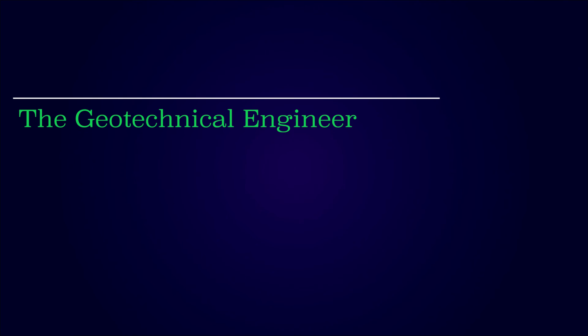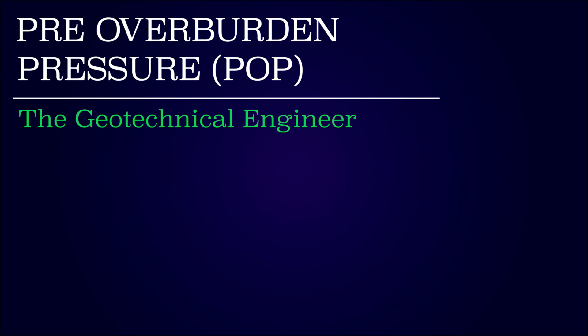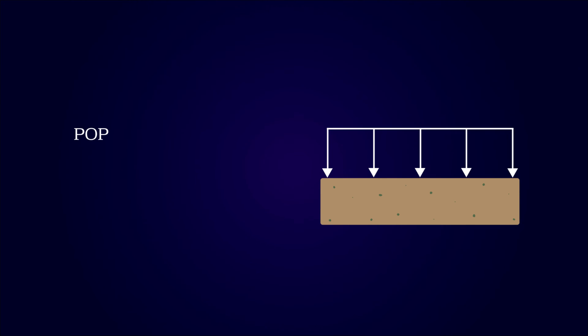In this video we will investigate the pre-overburden pressure of soil. The pre-overburden pressure, denoted POP, describes the magnitude of the maximum load ever placed on top of the soil. The parameter is directly correlated to how much load can be applied before the behavior changes from overconsolidated to normally consolidated.